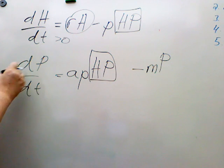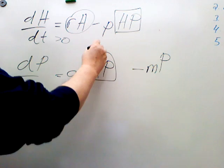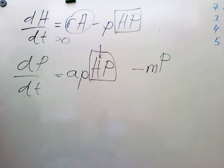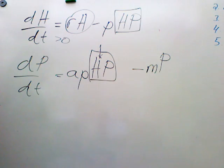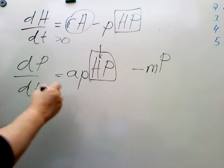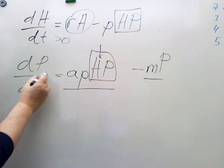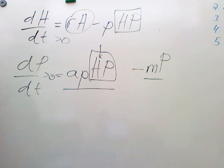Now, if you go down to the dP/dt equation, the growth of predators, you see that H is involved. So there's going to come a time, if we just let H grow, that suddenly this term is greater than that term, and dP/dt is greater than zero, so the predators start to grow.